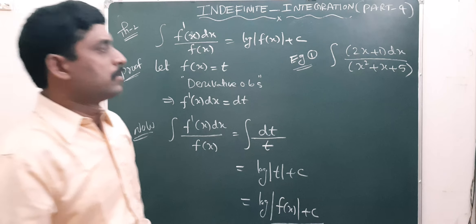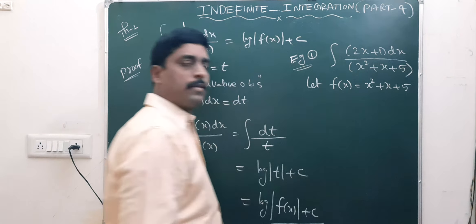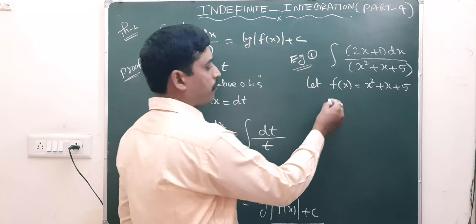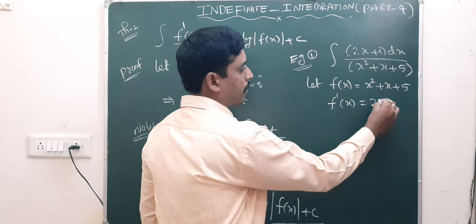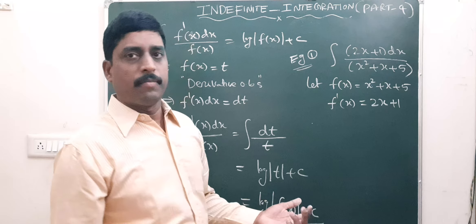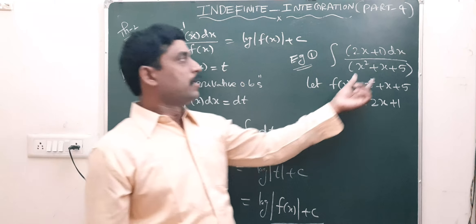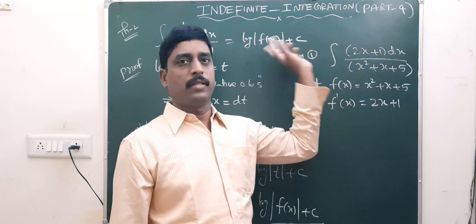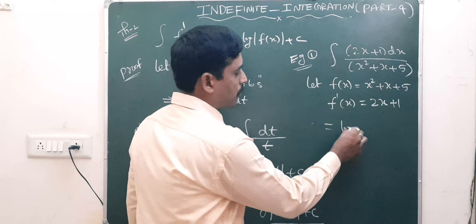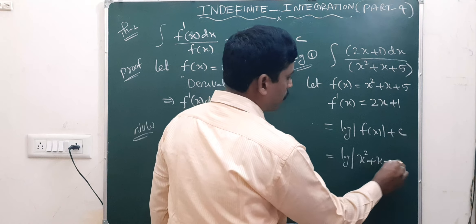So how can we solve this problem? Let us take the denominator as f(x). Then the numerator will be f'(x). Derivative of x² gives 2x, derivative of x gives 1, derivative of constant is 0. Therefore the numerator 2x+1 is f'(x). This is in the form of integral of f'(x) by f(x), which is theorem 2. By using the formula log mod f(x) plus c, in the place of f(x) we write x² + x + 5 plus c.